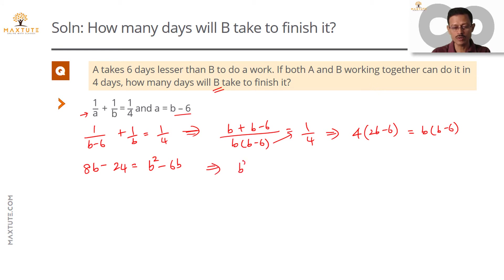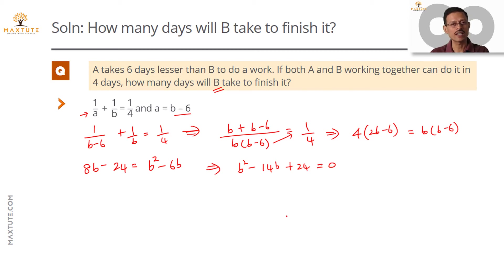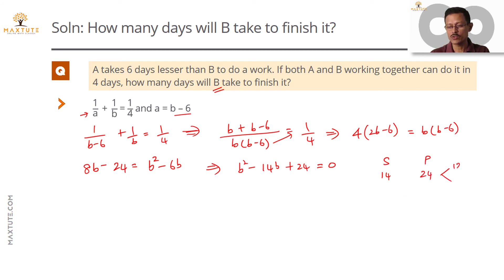Taking all terms to one side, we get B squared minus six B minus eight B plus twenty-four equals zero, which simplifies to B squared minus fourteen B plus twenty-four equals zero. This is a quadratic to be solved. The sum of the roots corresponds to fourteen and the product to twenty-four. Twenty-four can be written as twelve times two, and twelve plus two equals fourteen.